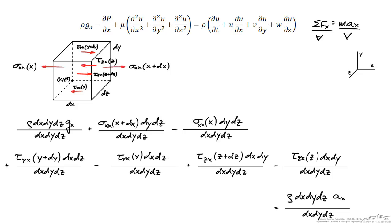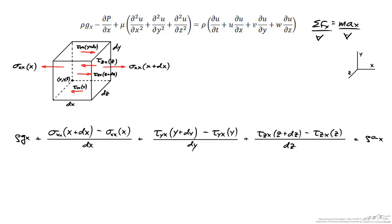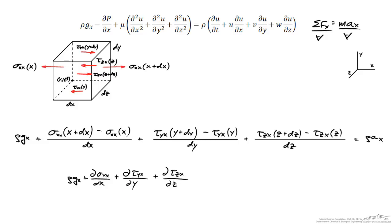Dividing through by the volume of the differential element, the dx dy dz terms cancel out. In some terms dy and dz cancel, dx cancels in others, and so forth. As I continue to simplify and take the limit as dx, dy, and dz approach zero, the expression turns into differential form. The resulting equation represents the sum of forces in the x direction due to gravity, normal forces on the left and right faces, shear stresses on the top and bottom, and shear stresses on the front and rear faces.